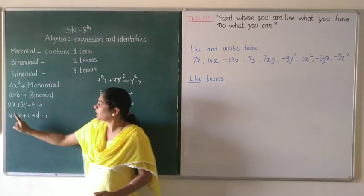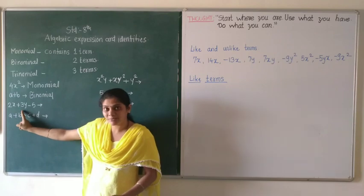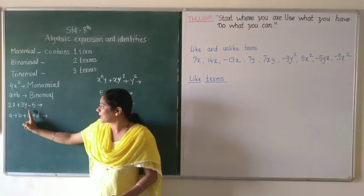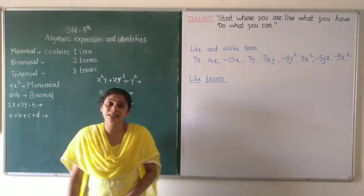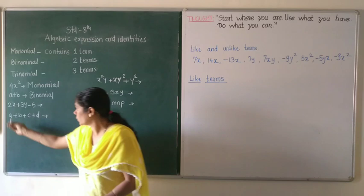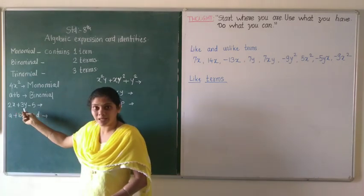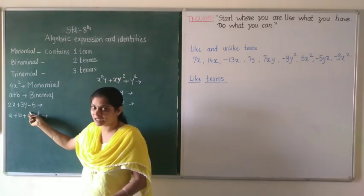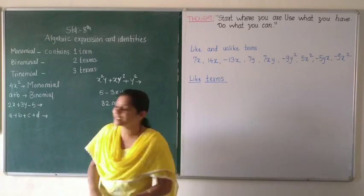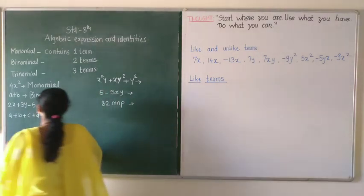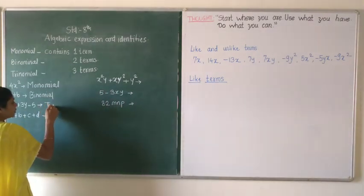Now the next is 2x plus 3y minus 5. How many terms are there? One, two and three. So it is a trinomial.